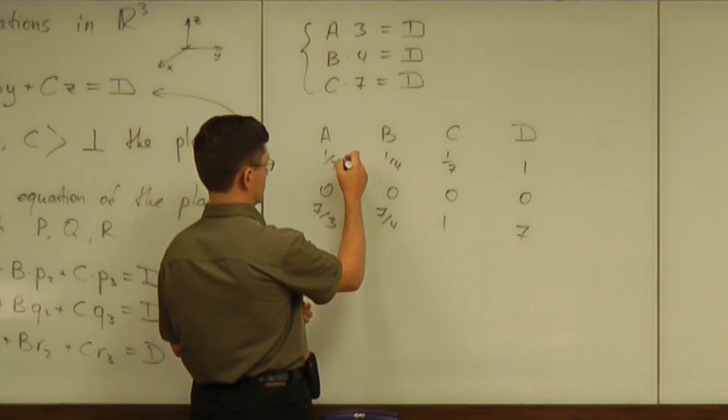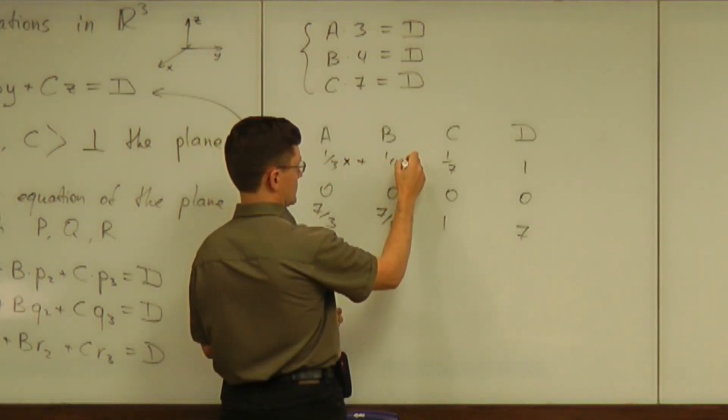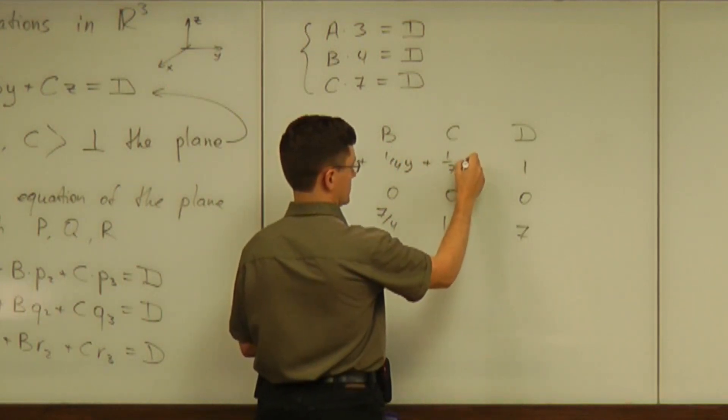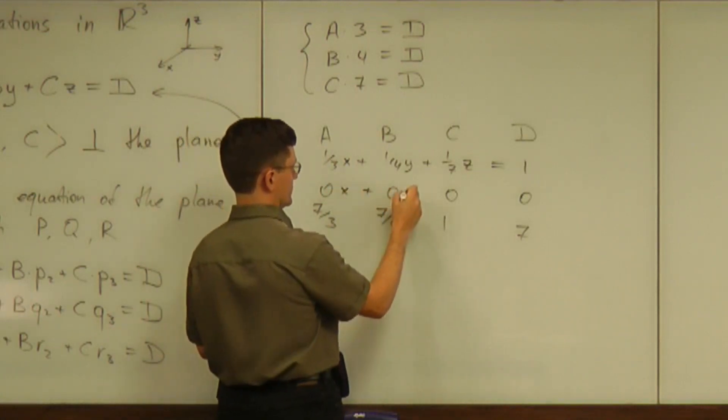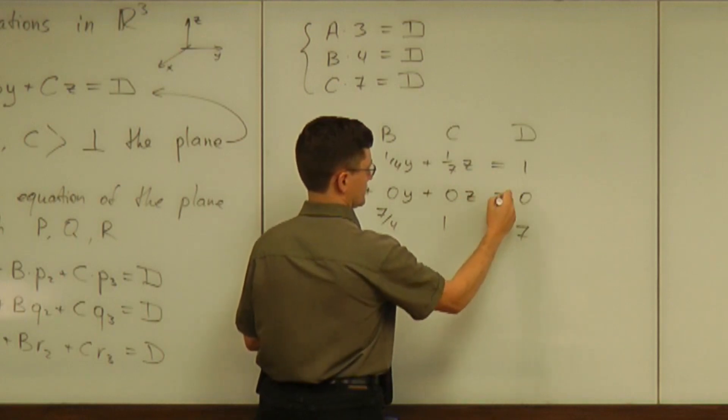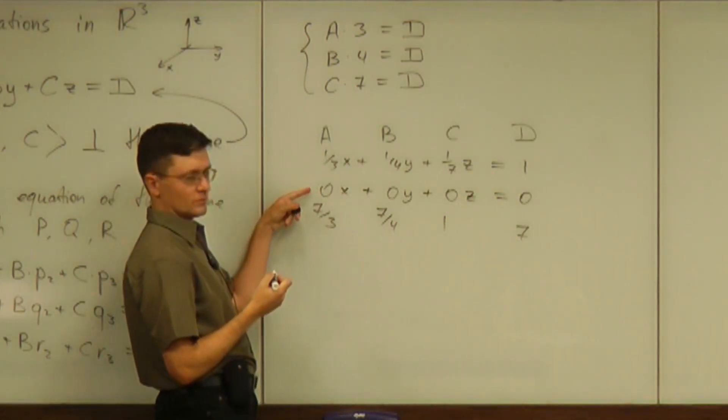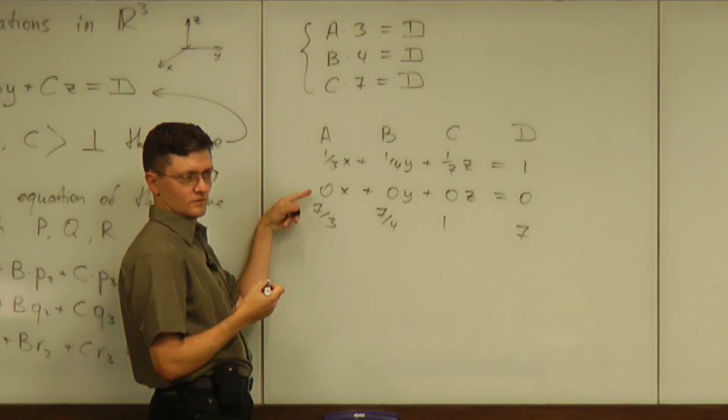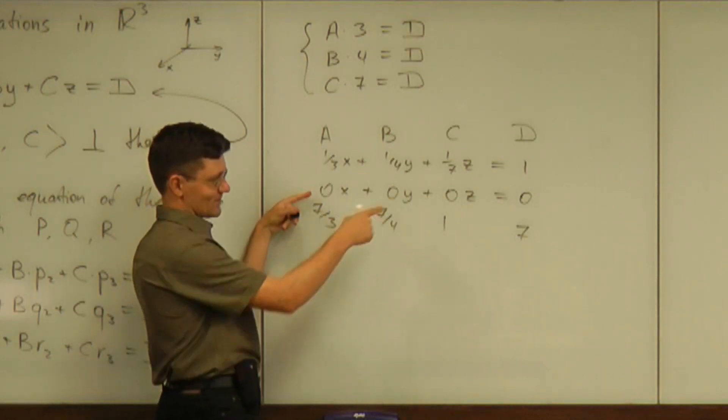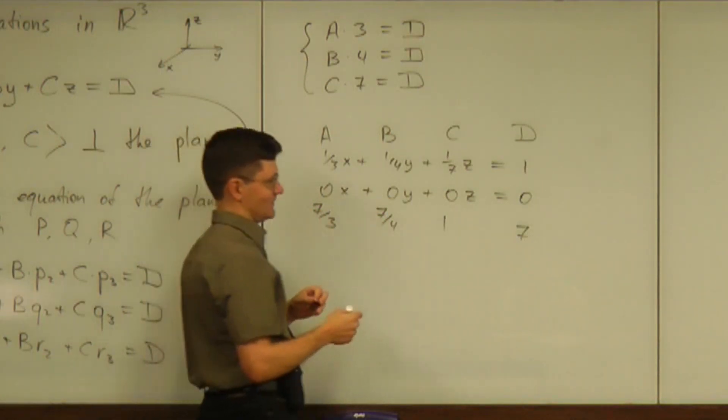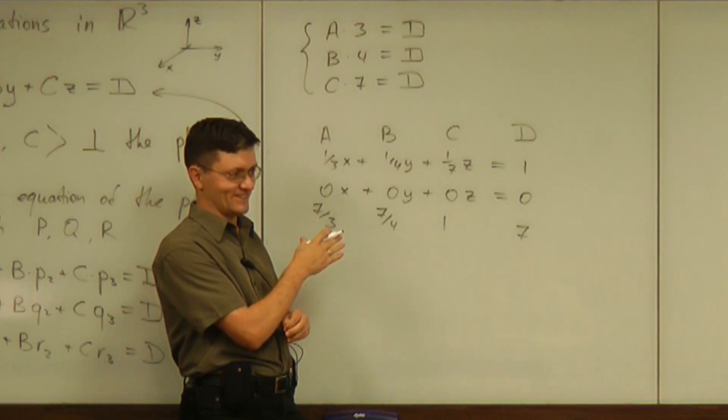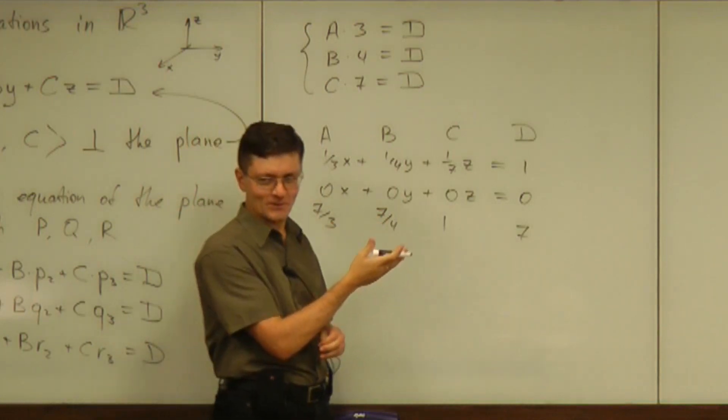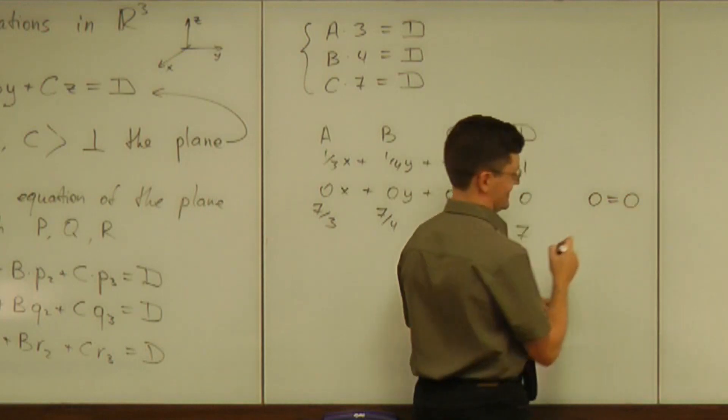So you can have a plane one third x plus one fourth y plus one seventh z equals one. You can also make a plane zero x plus zero y plus zero z equals zero. Is that equation one point, by the way? What kind of equation is that? Nothing?